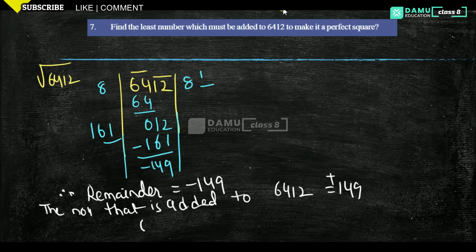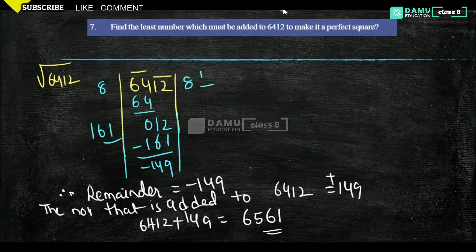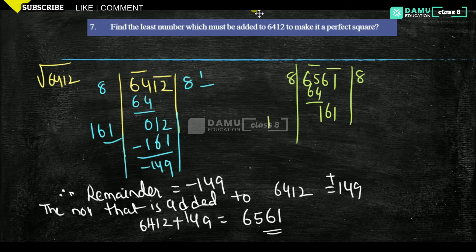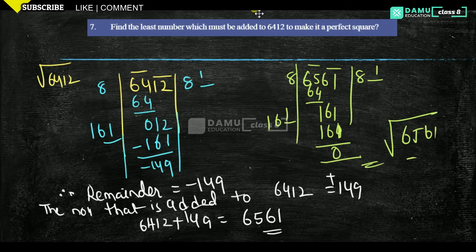So if you add 6412 plus 149, you get 6561. Let's verify this is a perfect square: taking 65 and 61 as groups, 8 eights are 64, bringing down gives 161, 8 twos are 16, and the remainder is 0. Yes, the square root of 6561 equals 81.